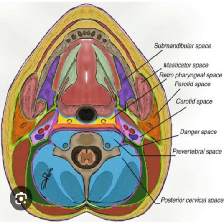Prevertebral space. Located between the prevertebral fascia and the vertebral bodies. Extends from the skull base to the coccyx. Minimal longitudinal extension of abscess due to dense areolar tissue and fibrous attachments. Carotid space. Within the carotid sheath, containing the carotid artery, internal jugular vein, vagus nerve, and sympathetic chain.